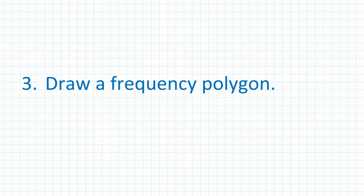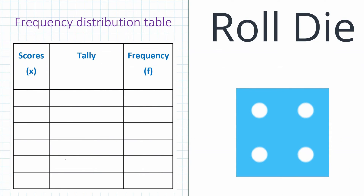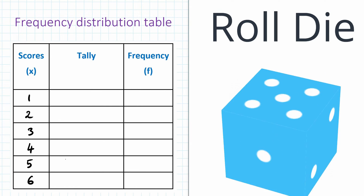Let's roll a die and record the results on the frequency distribution table. The scores are one to six, so just write this down: one, two, three, four, five, and six. Let's start rolling the die.